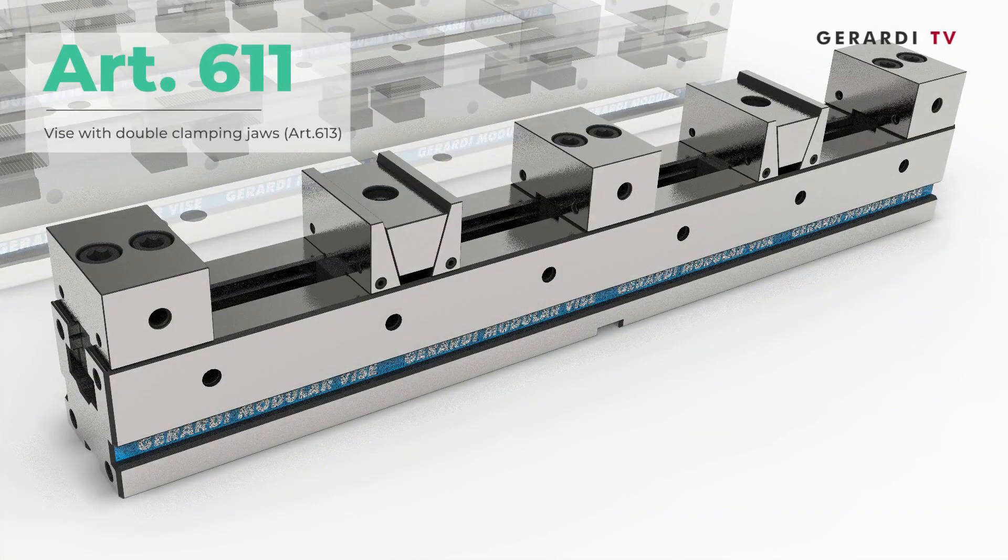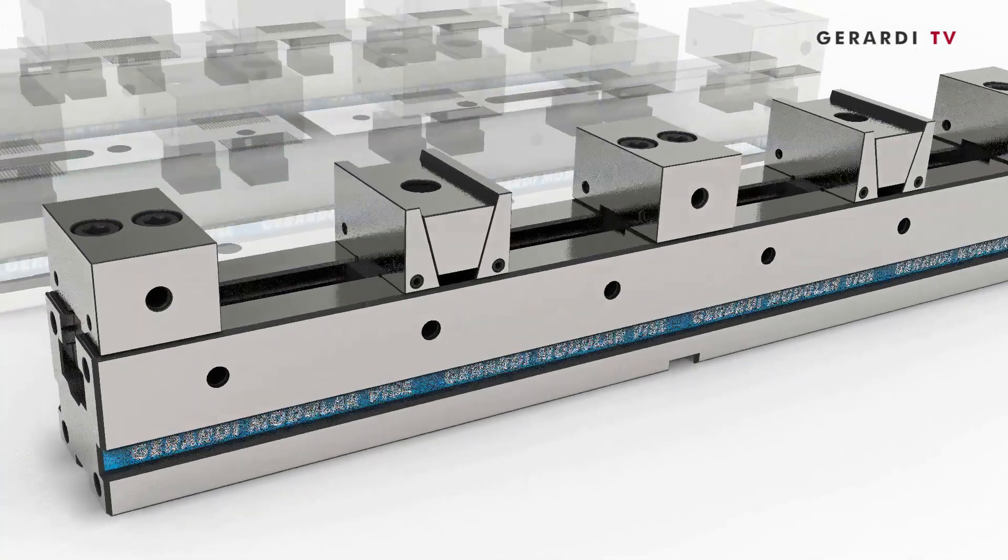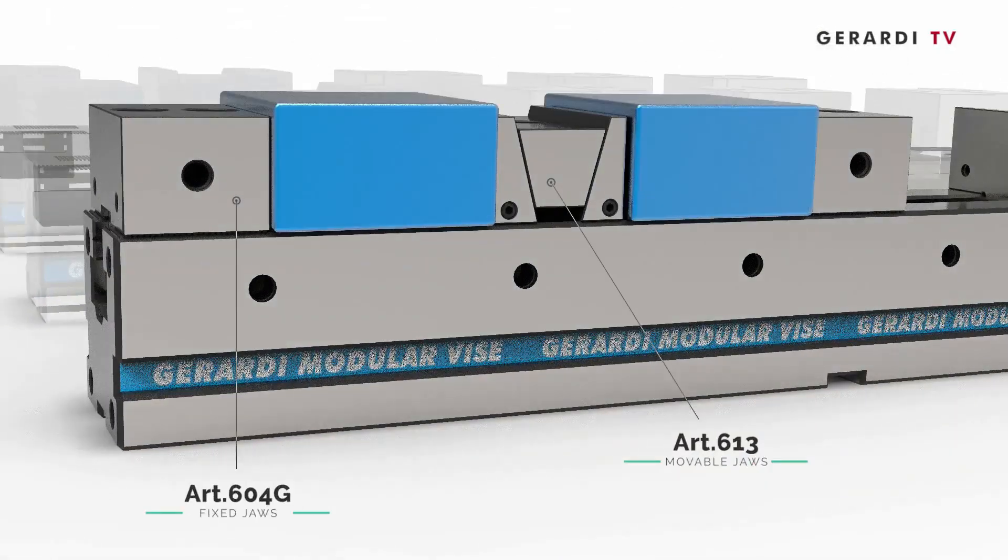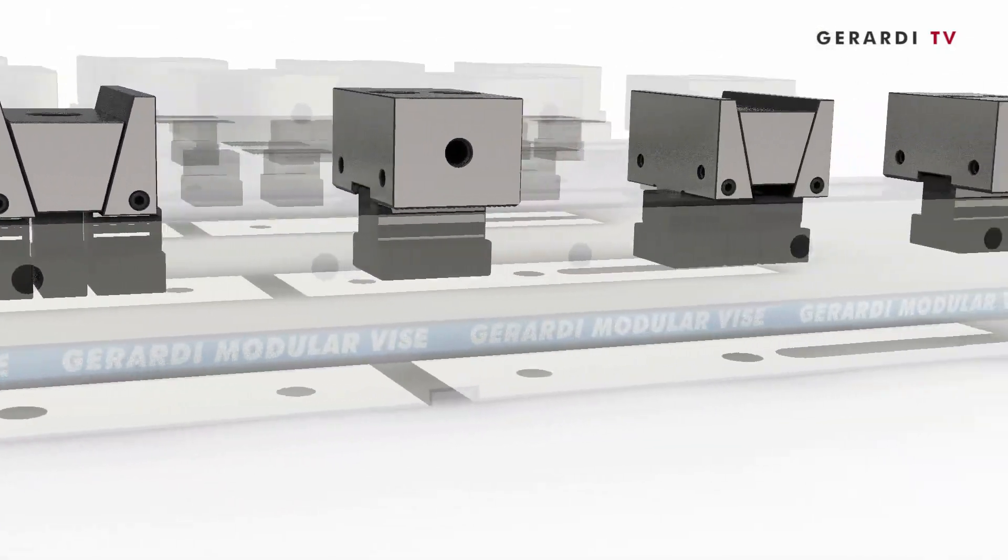Article 611 with double clamping jaws, to clamp simultaneously multiple workpieces on vise base or raised up with barrels.